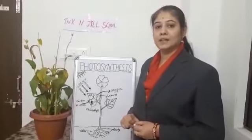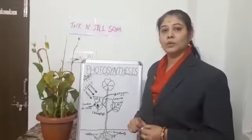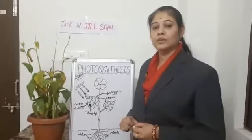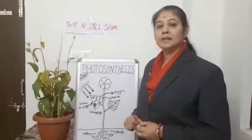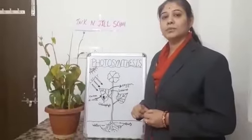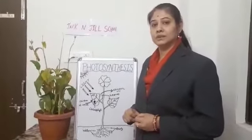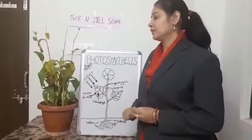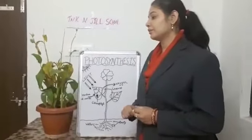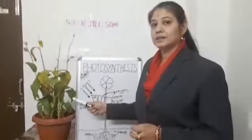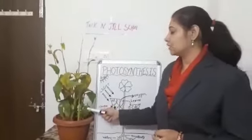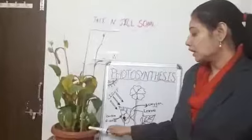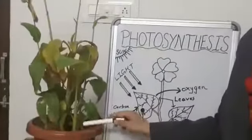Human beings and animals cannot make their own food. They depend on plants for food, but plants make their own food by the process of photosynthesis. Before starting photosynthesis, we understand the parts of a plant. The roots grow below the soil.